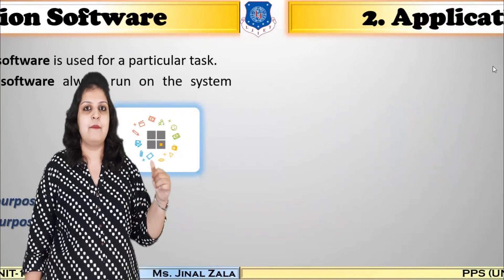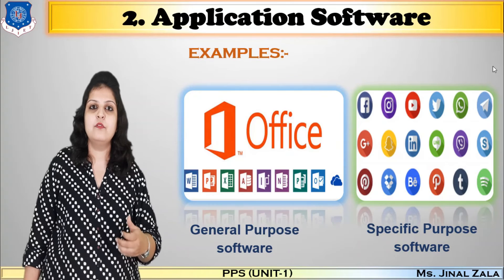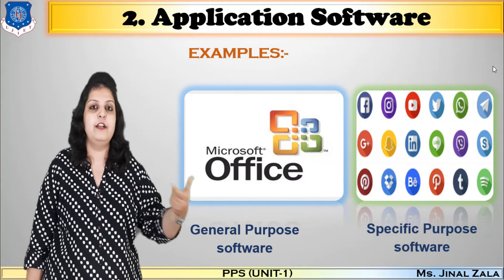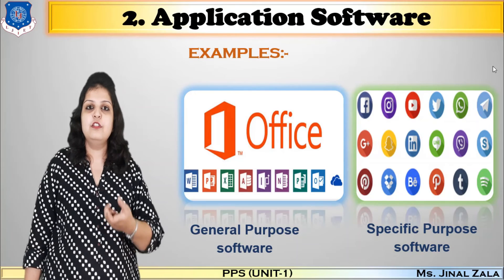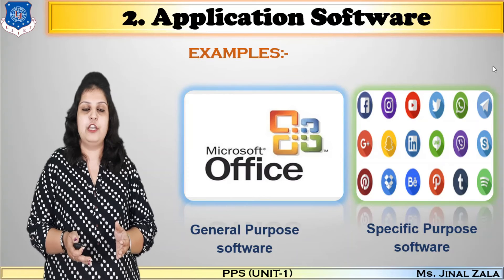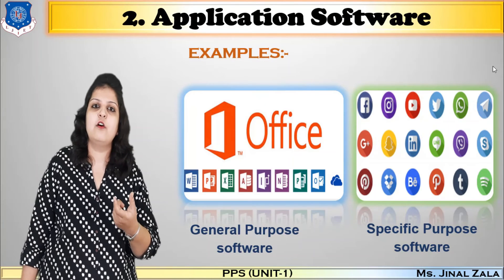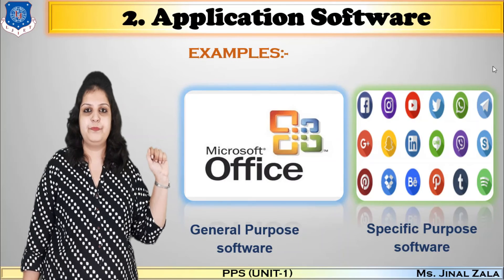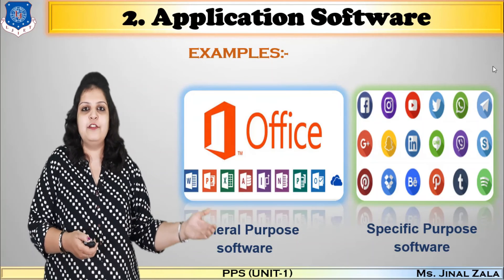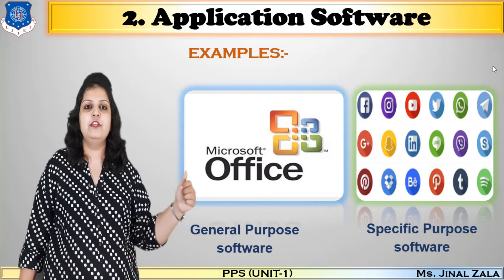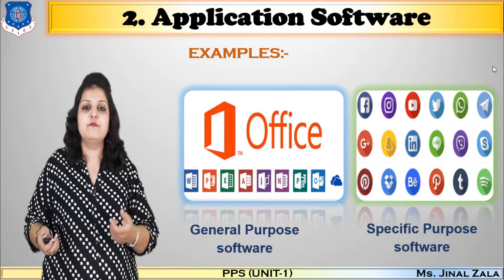What is general purpose application? MS Office is an example of general purpose software. In MS Office, we can do many different tasks — in PowerPoint we can create presentations, and in MS Word we can create document files. These multiple functions are combined in one application, so it is called general purpose software. Specific purpose software is used for only one particular task. For example, WhatsApp is mainly used for communicating — chatting with friends. YouTube is mainly used for watching or uploading videos. They are all used for one particular task, so they are called specific purpose software.